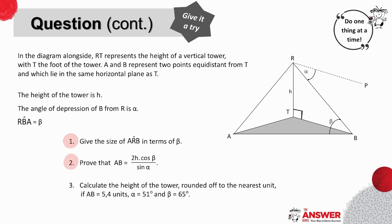Then they ask you to prove that AB equals 2H cos beta over sine alpha. Remember the recipe for this process. And then lastly, they ask you to calculate the height of the tower and they give you certain values. Make sure to work through this question from start to finish. It is so important to practice even the parts of maths that seem easier. You can take a moment to pause the video now to give this question a go.